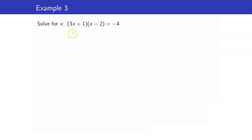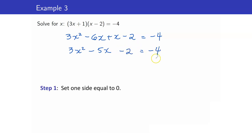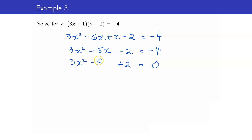So how do we proceed? First, multiply (3x plus 1) and (x minus 2): we get 3x squared minus 6x plus x minus 2 equals negative 4, which simplifies to 3x squared minus 5x minus 2 equals negative 4. Setting one side equal to zero by transposing, we get 3x squared minus 5x plus 2 equals zero. Note that the coefficient of x squared is no longer 1.